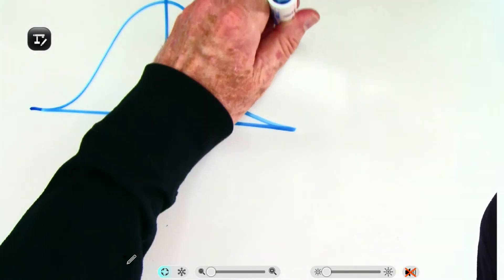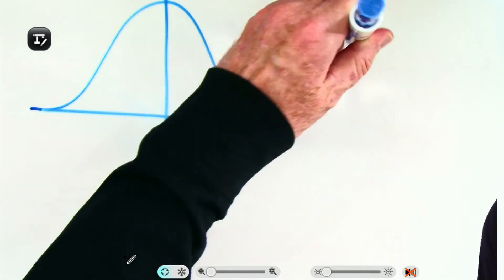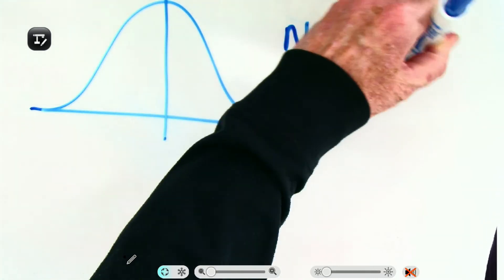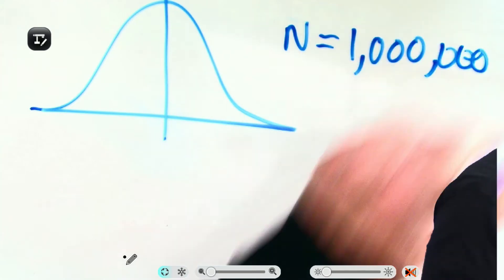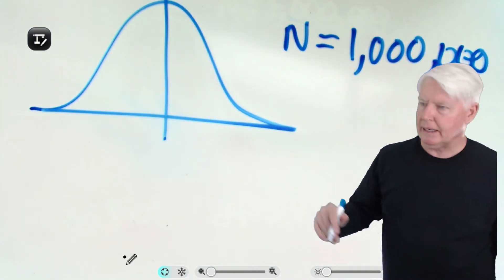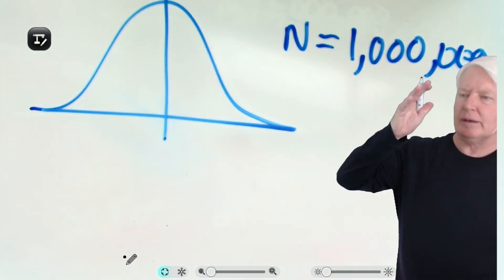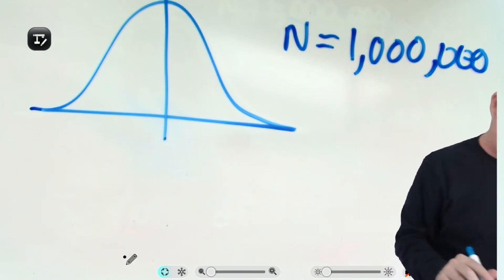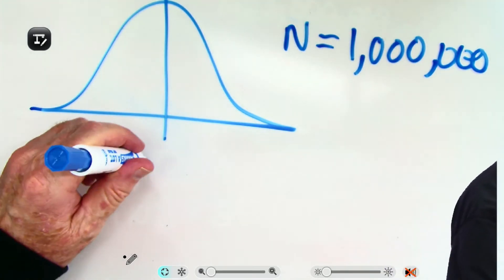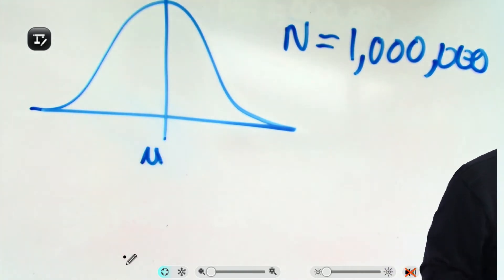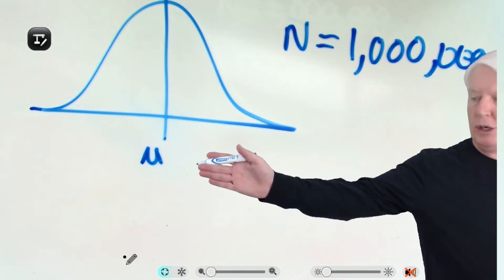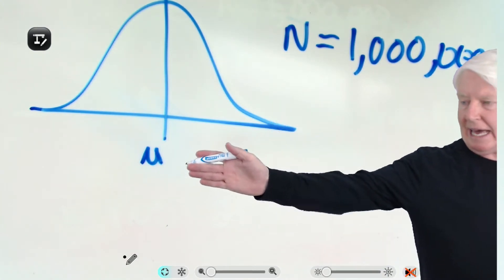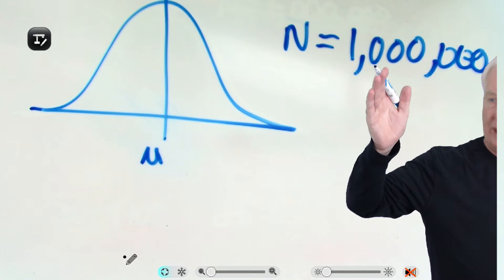Let's say that this population has 1 million parts in it. That's pretty big, and someone goes along and measures all million parts and calculates the average. There it is, and we call it mu, meaning it's the average from the population.